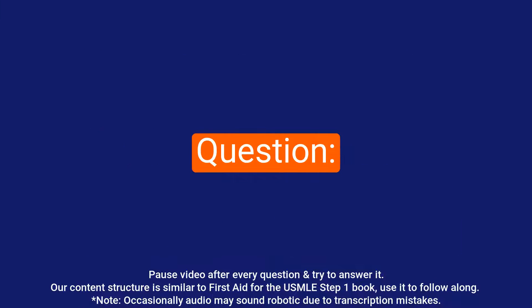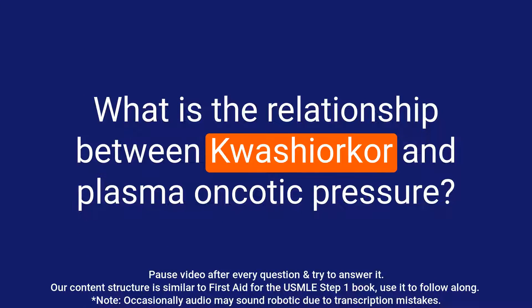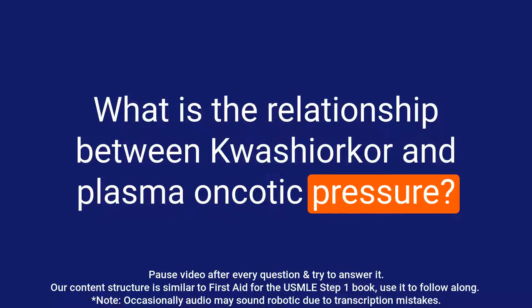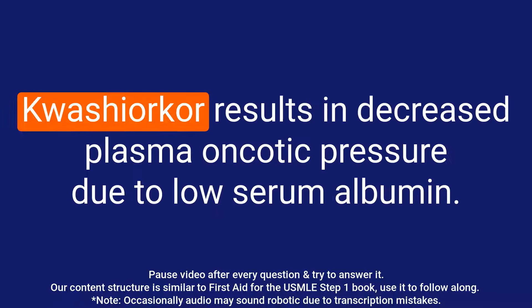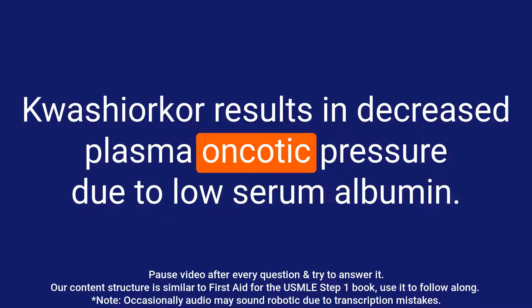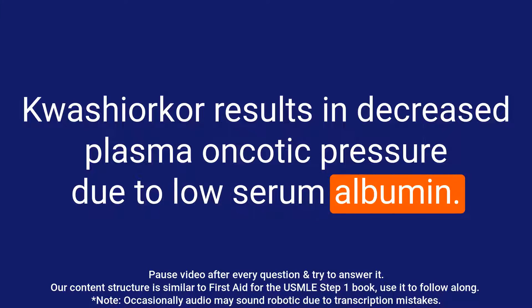Question: What is the relationship between kwashiorkor and plasma oncotic pressure? Answer: Kwashiorkor results in decreased plasma oncotic pressure due to low serum albumin.